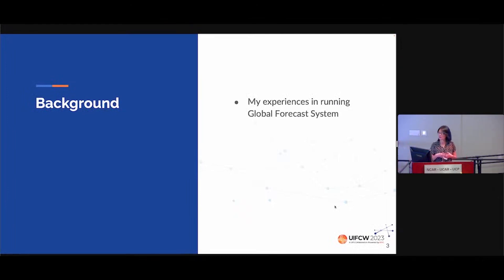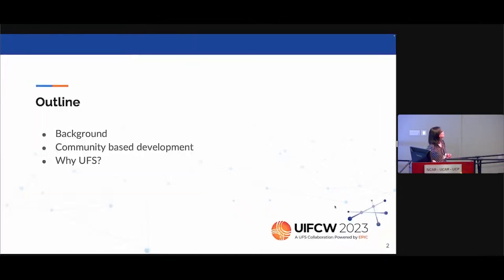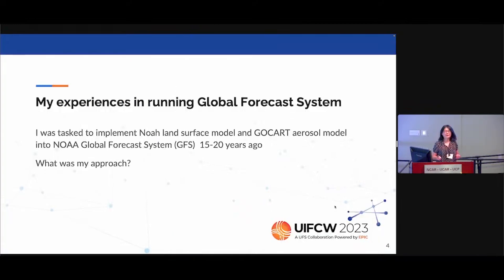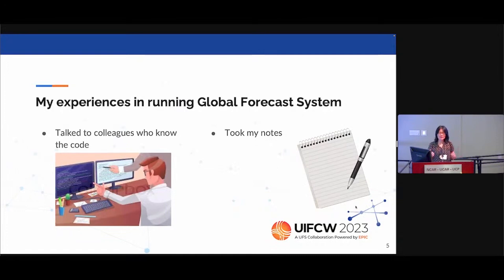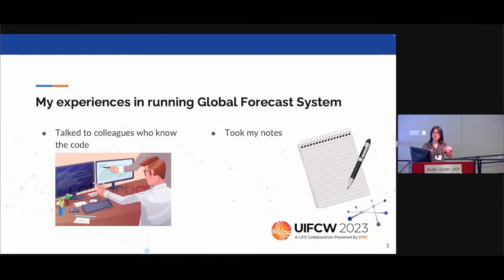The background is really about my experience surrounding NOAA's global forecast system. I was tasked to implement NOAA's land surface model and then NASA's GoCard into the global forecast system, 15 to 20 years ago. My approach then was to identify colleagues who really know the code. I went to the code, got a notebook and a pen, talked to them about what I needed to do. Those experts told me their code, their name lists, their run scripts, their results. I tried my best to read everything and reproduce it. This process was not easy because most of the time I couldn't reproduce, as I may not have expressed myself carefully, and my colleague may have forgotten to tell me some name list. This was a really labor-intensive process.